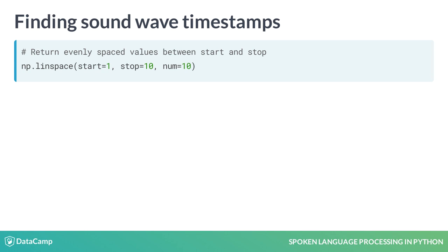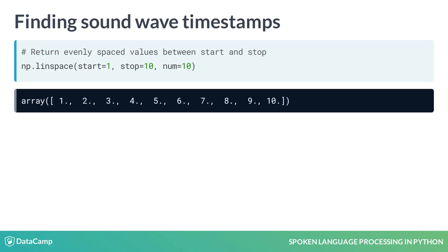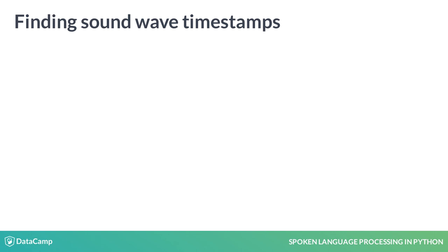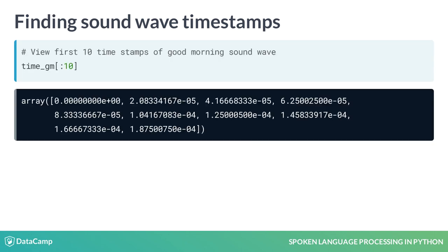Let's try it with start as 1, stop as 10, and num as 10. As you can see, it returns an array of evenly spaced numbers between 1 and 10. Let's try it on our own values to get the timestamps of pieces of information in our SoundWave. Start will be 0 for the beginning of the audio file, stop will be the length of our SoundWave array over the frame rate — or in other words, the duration — and num will be the length of our SoundWave array since each item is a SoundWave value. Each of these values is the time in seconds where each SoundWave byte occurred, and we'll be able to use these timestamp values later to visualize our SoundWave.